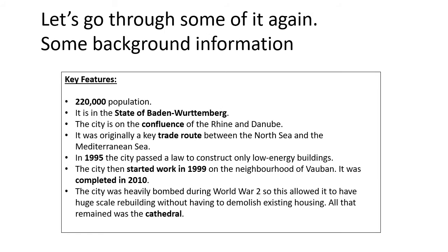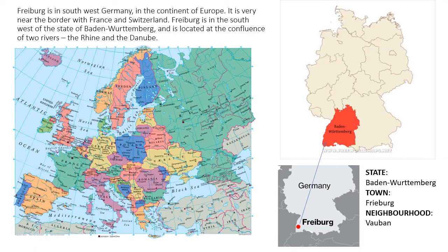Freiburg — we're going to locate and remind you where it is in a minute. Freiburg is a town with 220,000 people living there; it's in the state of Baden-Württemberg in Germany. The city is on the confluence of the Rhine and the Danube, the point where the two rivers meet. It was originally a key trade route between the North Sea and the Mediterranean Sea. In 1995 they passed a law to construct only low-energy buildings, starting to think about sustainability. In 1999 the neighbourhood of Vauban was built, which was completed in 2010 — a neighbourhood known for being incredibly, almost militantly, sustainable. The city was heavily bombed during World War II, which gave it the opportunity to rebuild and improve. Freiburg is located in the very southwest of Germany, right on the border near France and Switzerland.